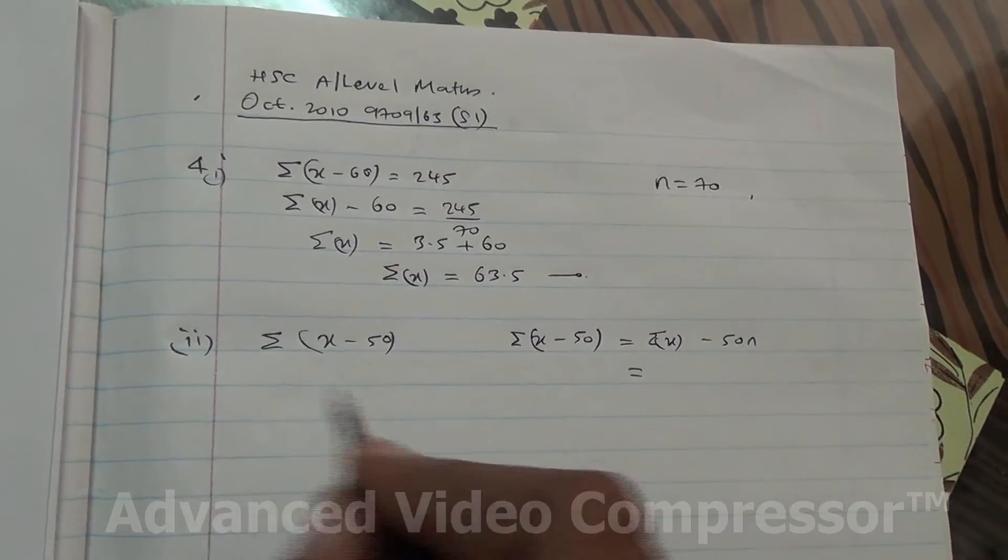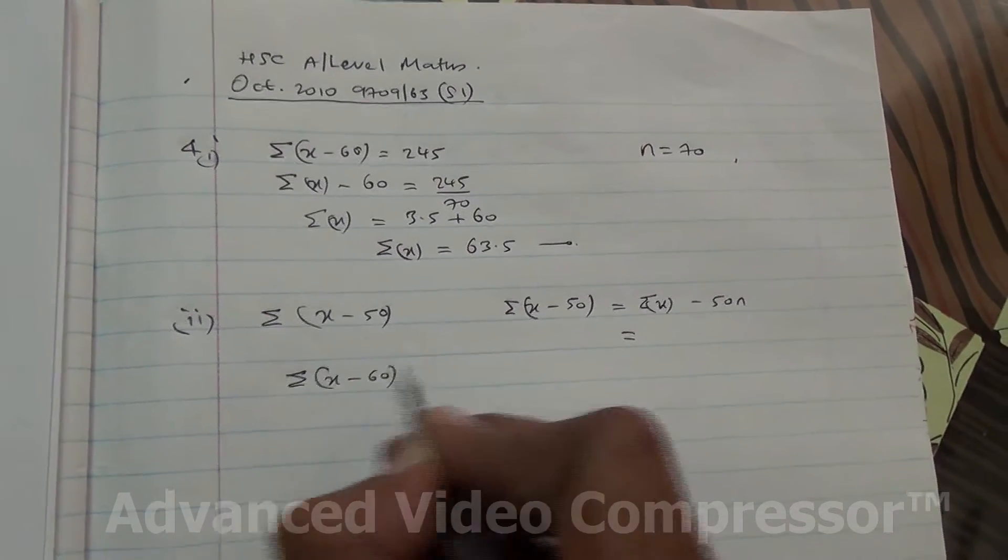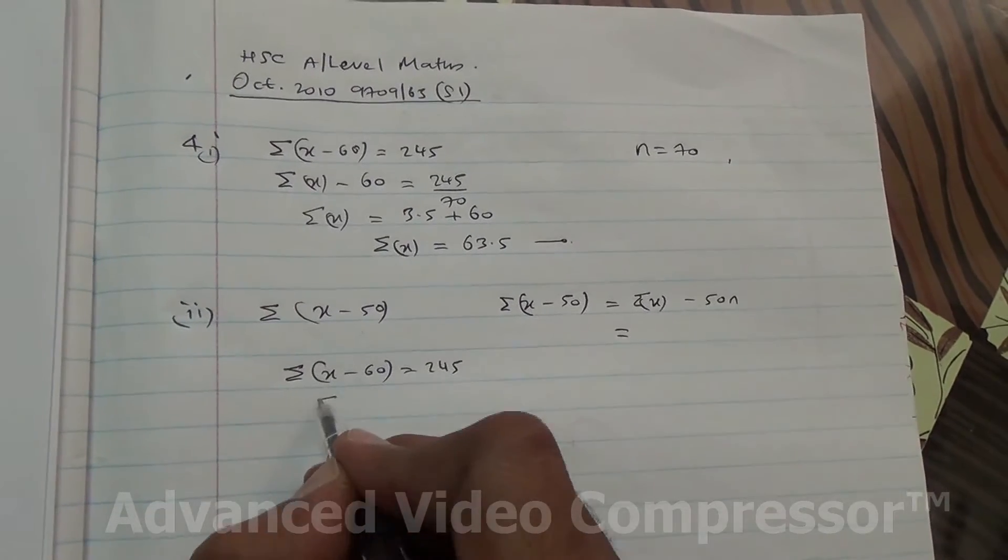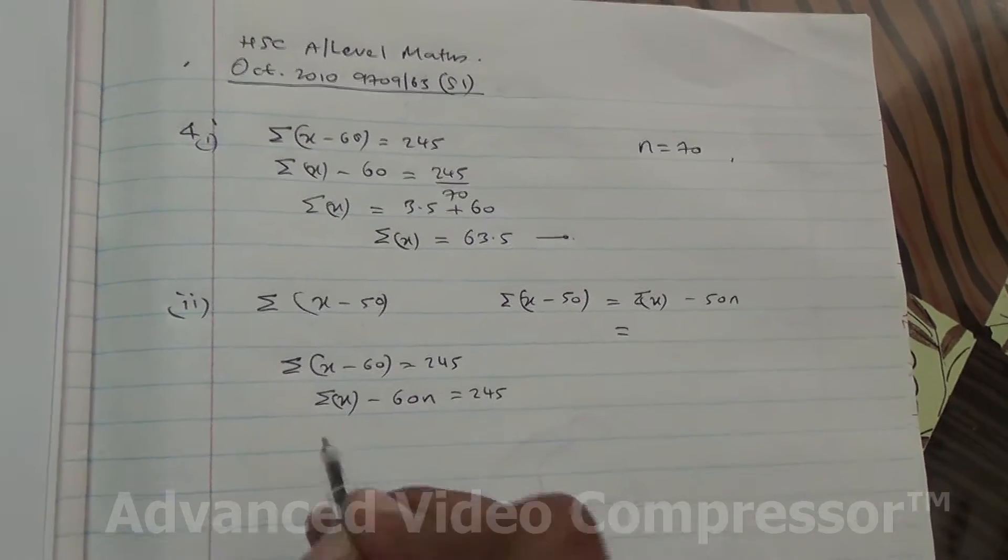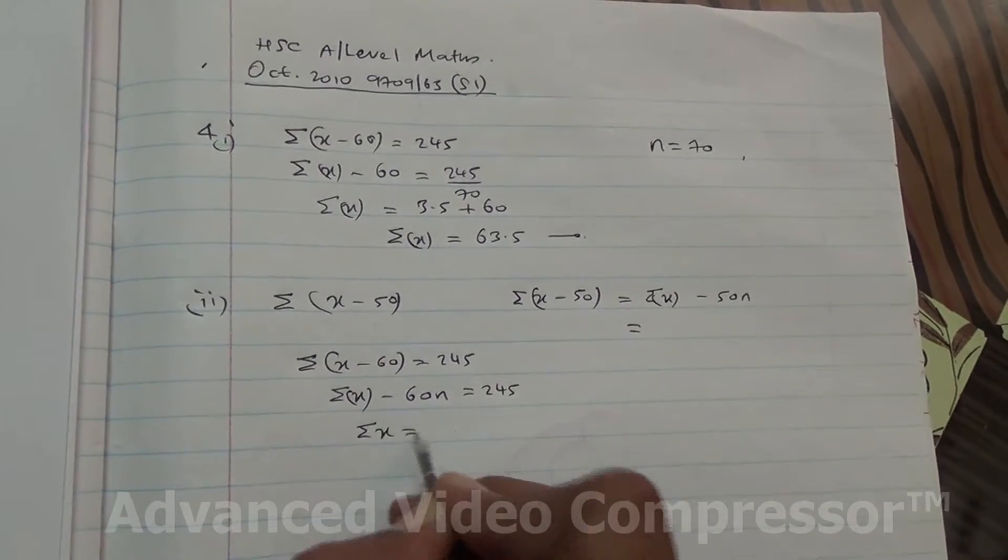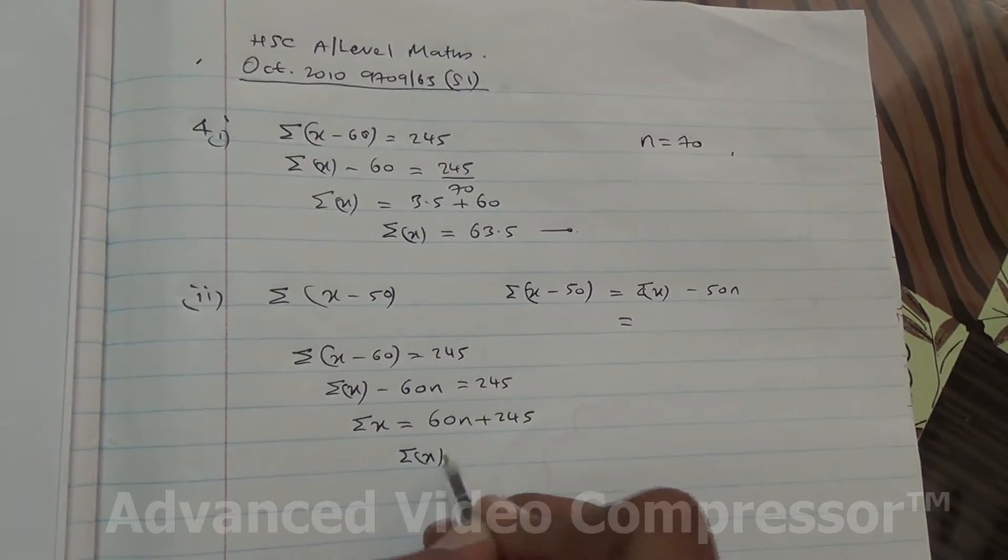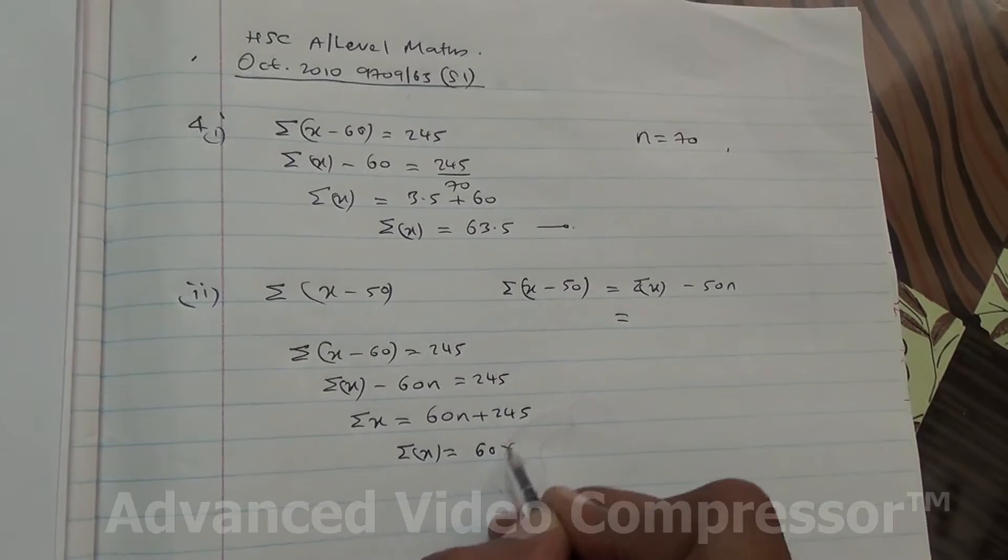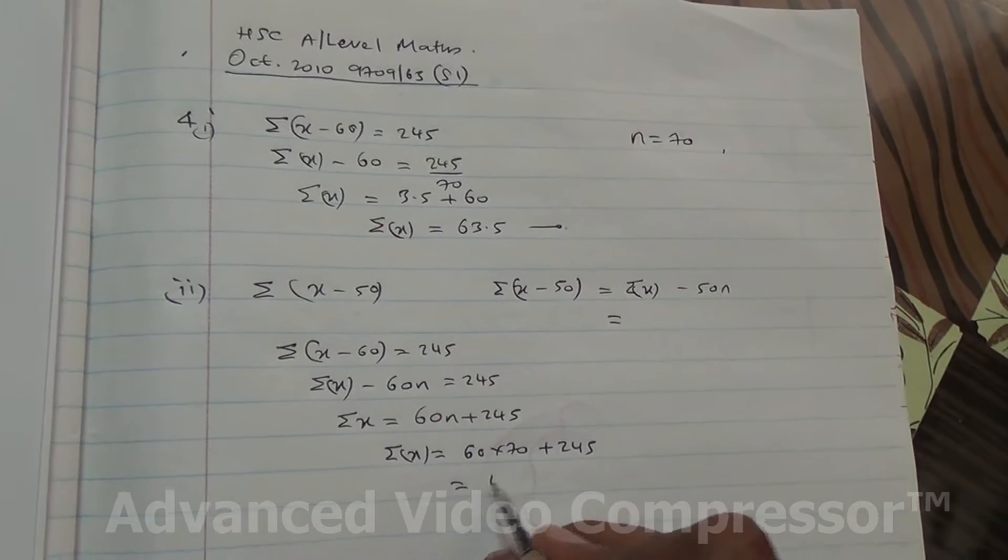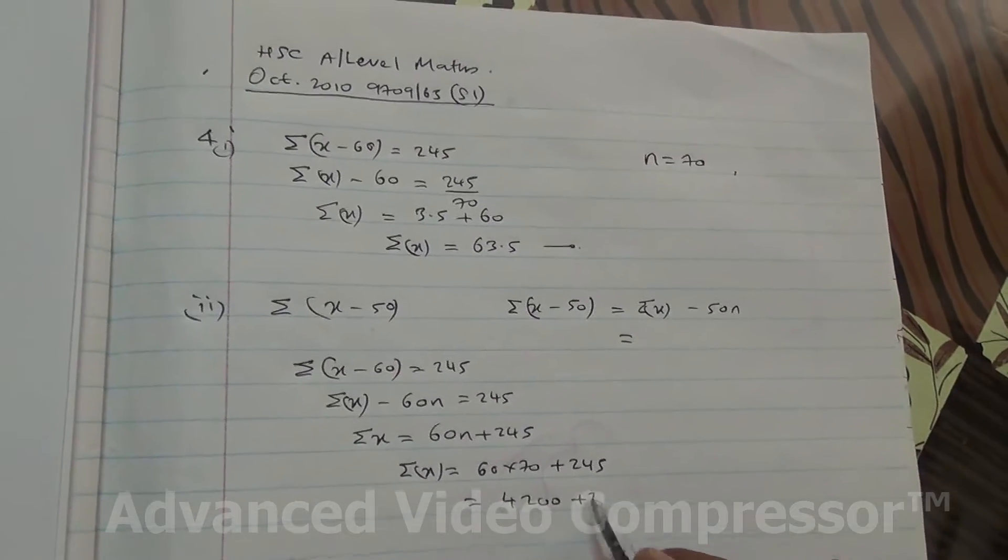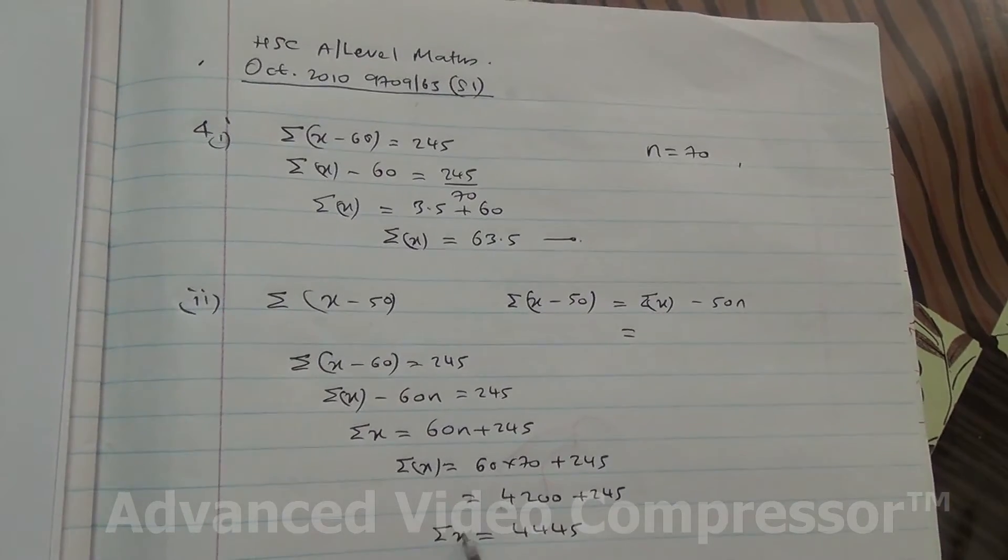Initially, as I was saying, x minus 60 is equal to 245. So that means Σ(x minus 60n) is equal to 245. So Σ(x) is equal to 60n plus 245, and therefore Σ(x) is going to be 60 times 70 plus 245, and that is 4200 plus 245, so this is the summation of x.